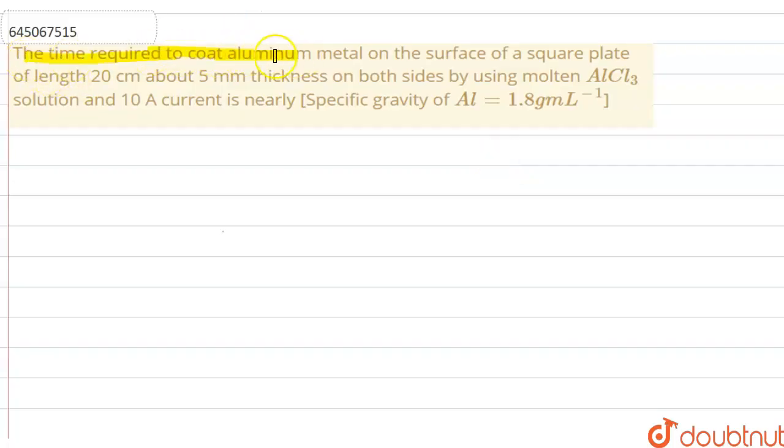The time required to coat aluminum metal on the surface of a square plate of length 20 centimeters, about 5 mm thickness, on both sides using molten AlCl3 and 10 ampere current is nearly... And a specific gravity is also given here.